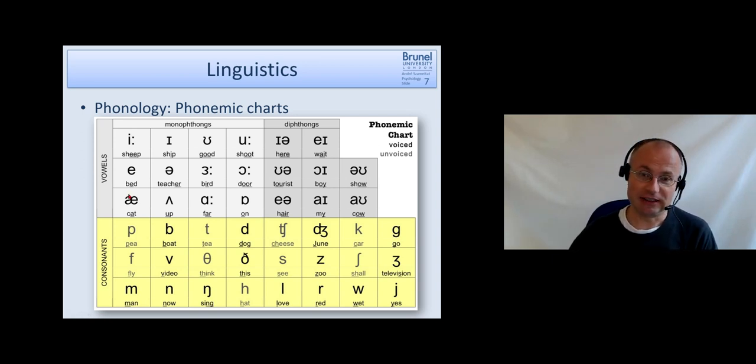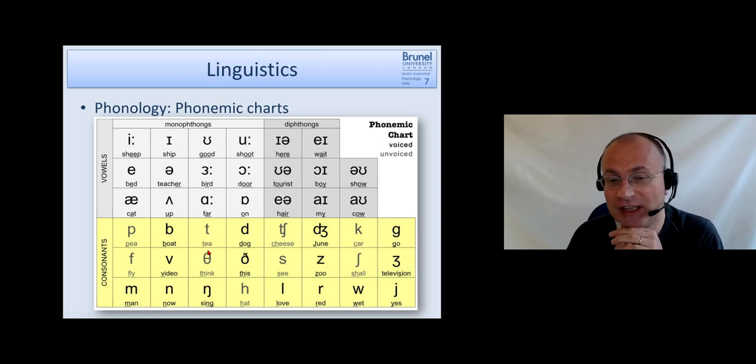Just as another example, the 'th' phoneme, like in 'think'—this phoneme does not exist in the German language, which is why Germans often have this accent and have difficulty with 'think' and would pronounce it as 'sink' or 'zinc', because they just don't have the phoneme.